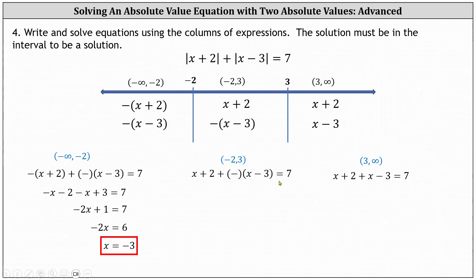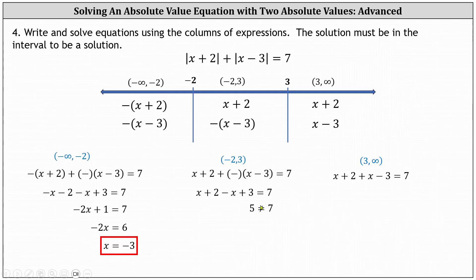Moving to the second equation, we can write this as x plus two minus the quantity x minus three equals seven. Removing the parentheses: x plus two minus x plus three equals seven. Combining like terms, the x terms simplify to zero, leaving us with five equals seven. Since five doesn't equal seven, there are no solutions over this interval.